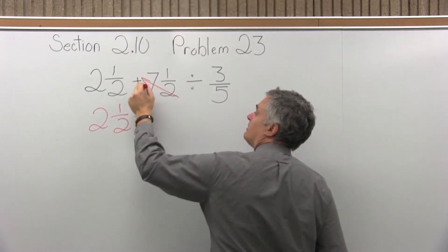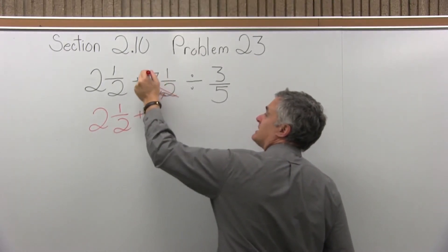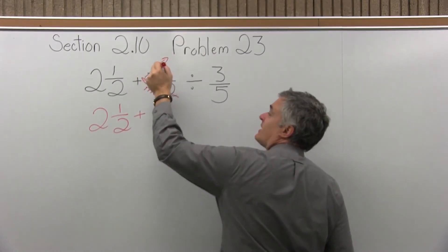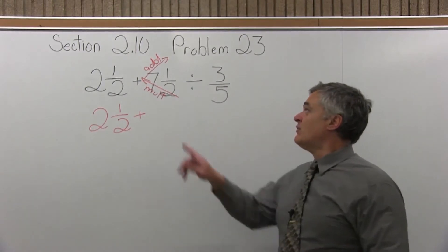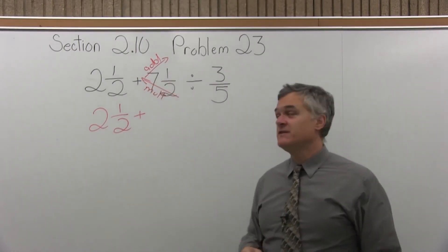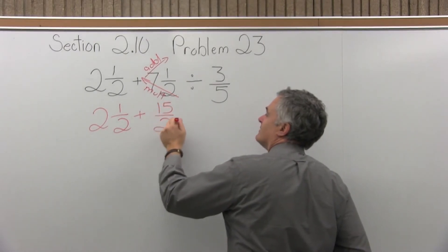This seven and a half can be rewritten as fifteen halves. And I get that by multiplying the denominator times the number in front. Two times seven is fourteen. Take that result of fourteen and add to the numerator. Fourteen plus one more is fifteen. So the seven and a half can be written as fifteen halves.